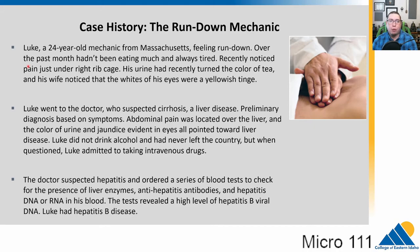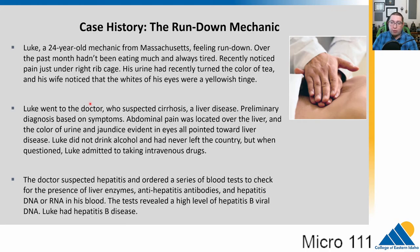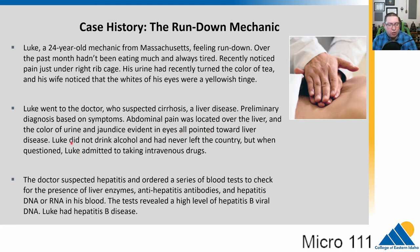In our next case history, we have Luke — he's 24 years old, a mechanic in Massachusetts, and he's been feeling run down for a long time. For the past few months he hasn't been eating much and is always tired. Recently he's noticed pain right under his ribcage, his urine has changed to a dark tea color, and his wife noticed the whites of his eyes are taking on a yellowish tinge. The doctor suspects cirrhosis, which is a liver disease. The abdominal pain is located right over his liver, and the jaundice — yellowing of the eyes — all point toward liver disease.